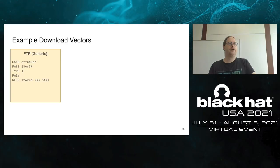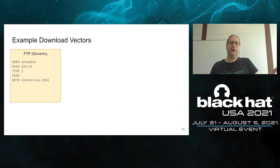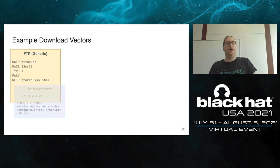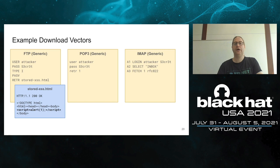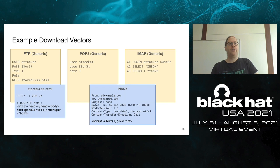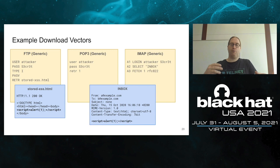These download attacks are completely generic and do not depend on implementation details. For POP3 and IMAP protocols, the attacker can download emails — requiring an email account at the server — where a prepared email containing the JavaScript payload is downloaded using protocol-specific commands. The attacker logs in with their own credentials and instructs the IMAP or POP3 server to provide the prepared email used for the attack.